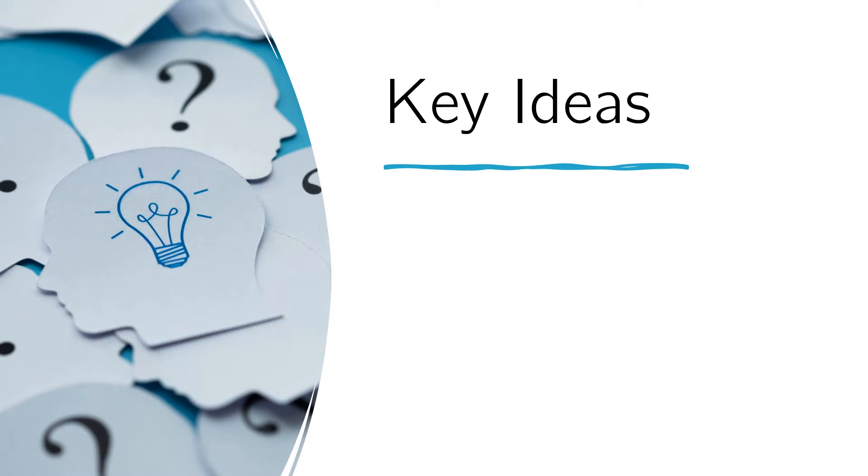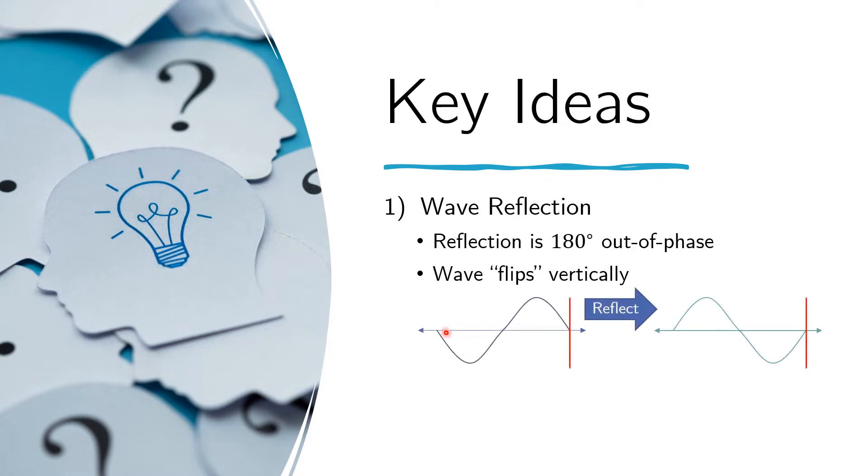Let us now consider a few ideas that will be useful in the solution of this problem. First is the idea of wave reflection. Wave reflection at a fixed end means that the reflection is 180 degrees out of phase. What that means is that the wave is flipped vertically. If we start with a wave like this, after it reflects off this fixed end, it will now look like this.